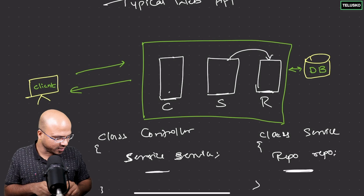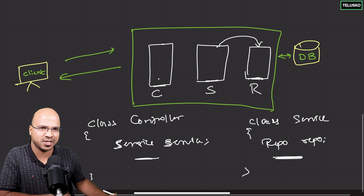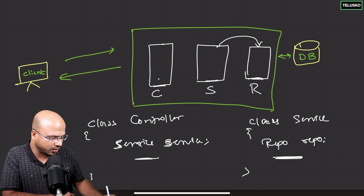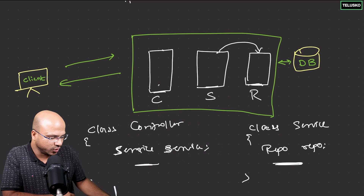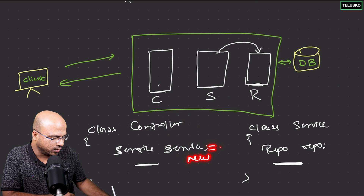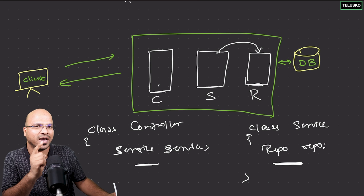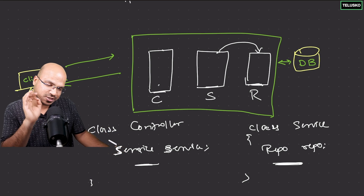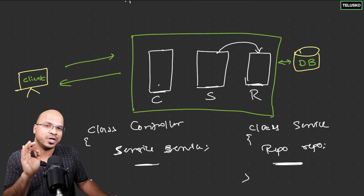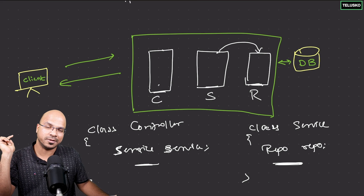We have some external thing — in this case, it is Spring. Spring says, you don't worry — every time you want an object, just ask for it and I will give it to you. That is injecting the object. So in this example with a controller and a service, if the controller needs the object of service, we don't have to say new service. You simply ask Spring Framework to inject the object — just mention the reference, and Spring will give you the object. That is called dependency injection.